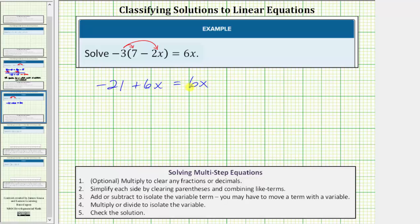To undo the positive 6x on the right side, we would subtract 6x on both sides. Let's go ahead and do this. And now we simplify.